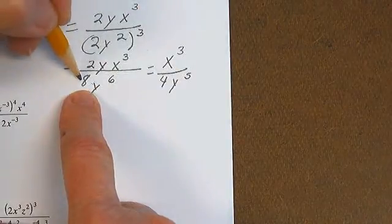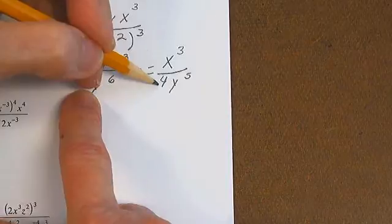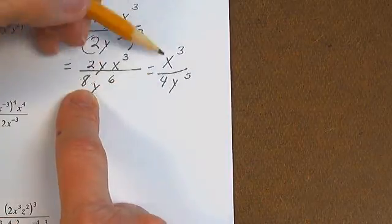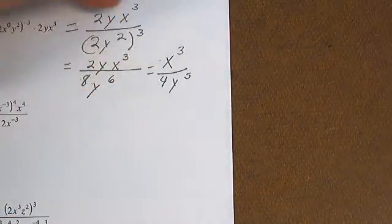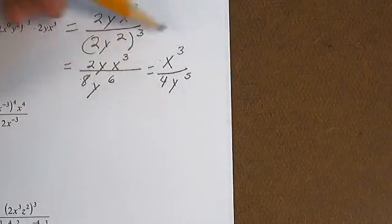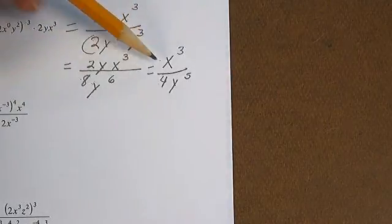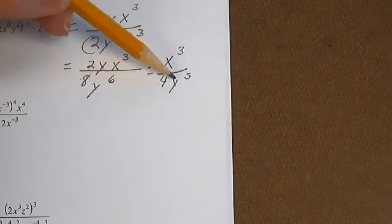Because 2 divided by 8 is 1 over 4, but we don't have to write the 1 — we just know it's there. X cubed over 4y to the 5th.